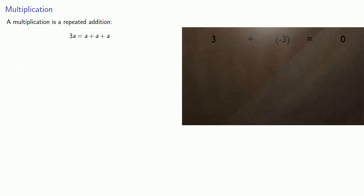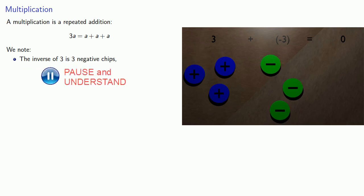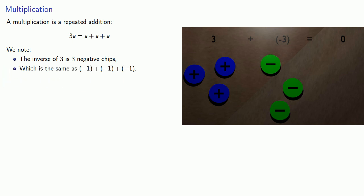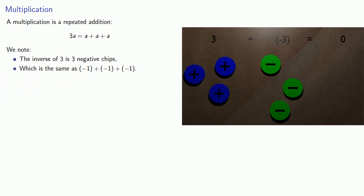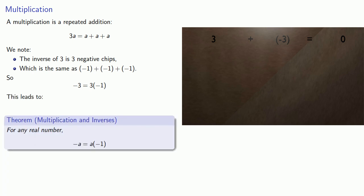We might make the following observation: the inverse of 3 is 3 negative chips, because that's what we need to add in order to get nothing. But that's really the same as negative 1 plus negative 1 plus negative 1 — that's 3 negative 1's added together. So we could say the additive inverse of 3 is 3 negative 1's. This leads to the idea that for any real number, the additive inverse of a is a times negative 1.